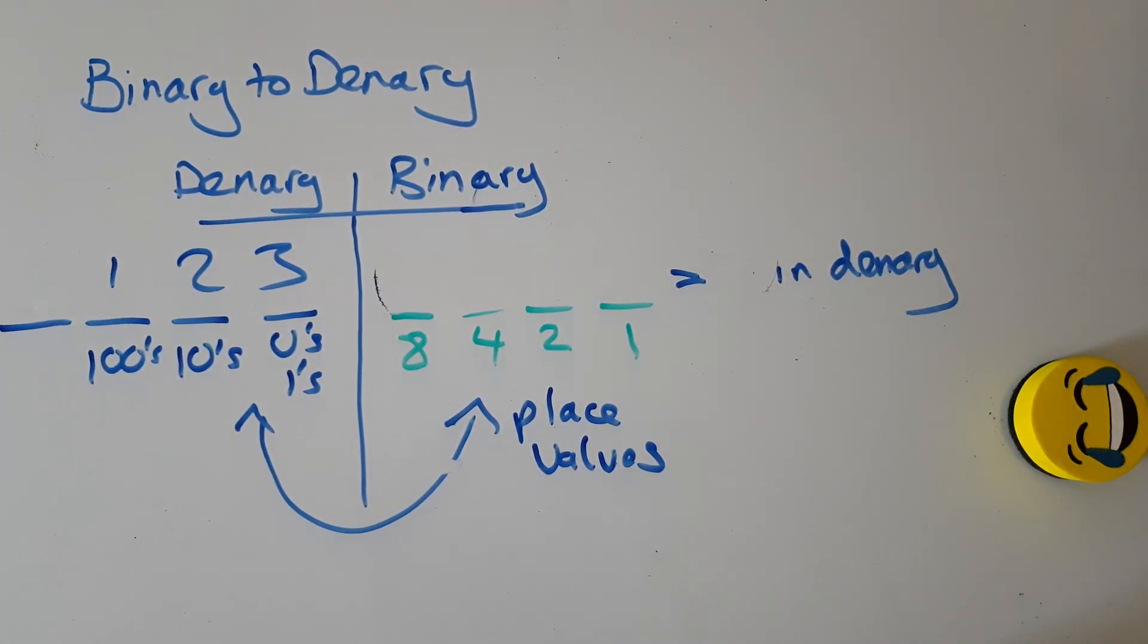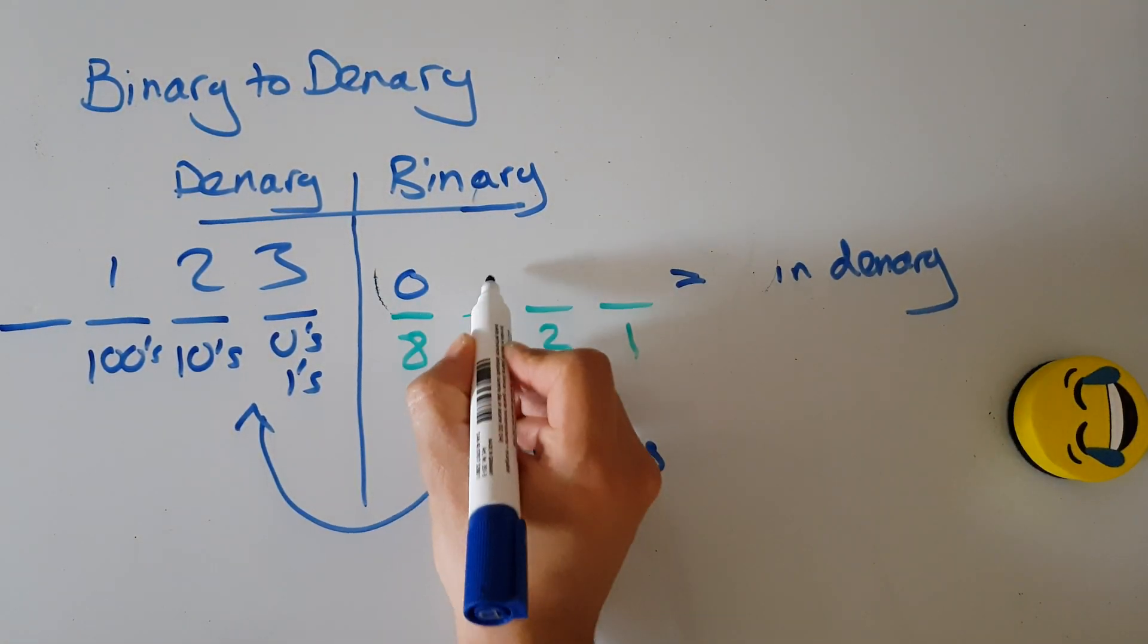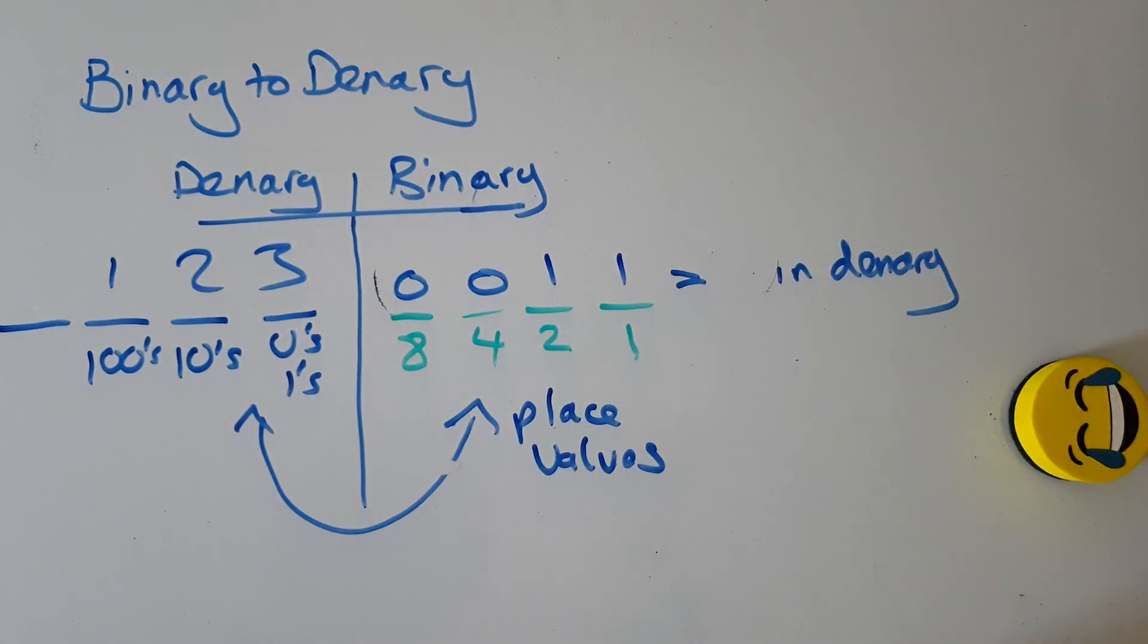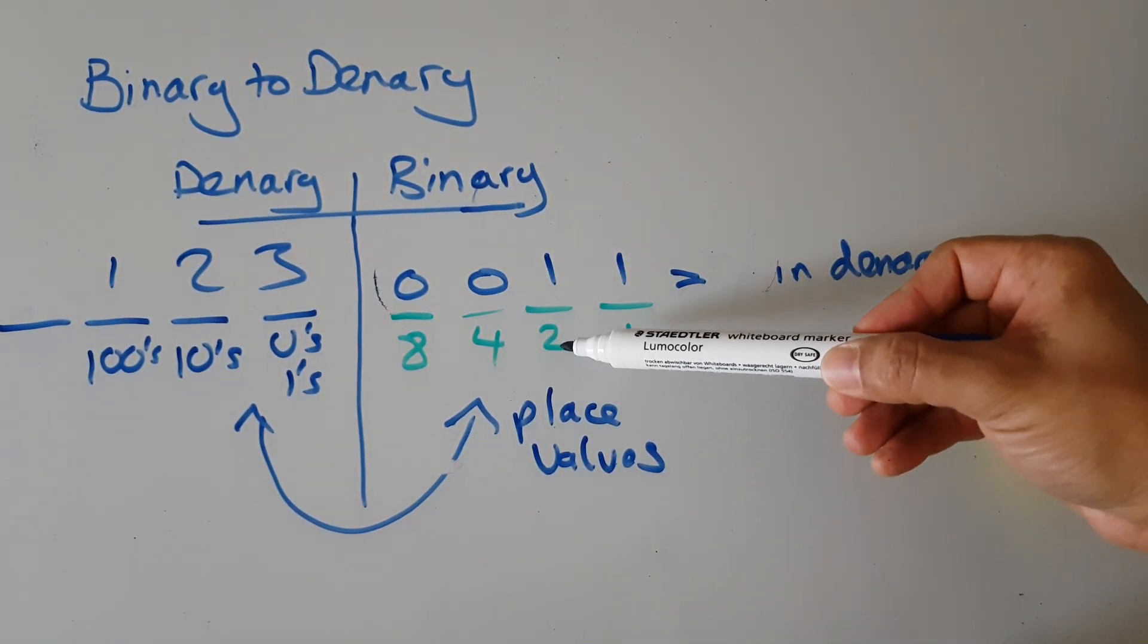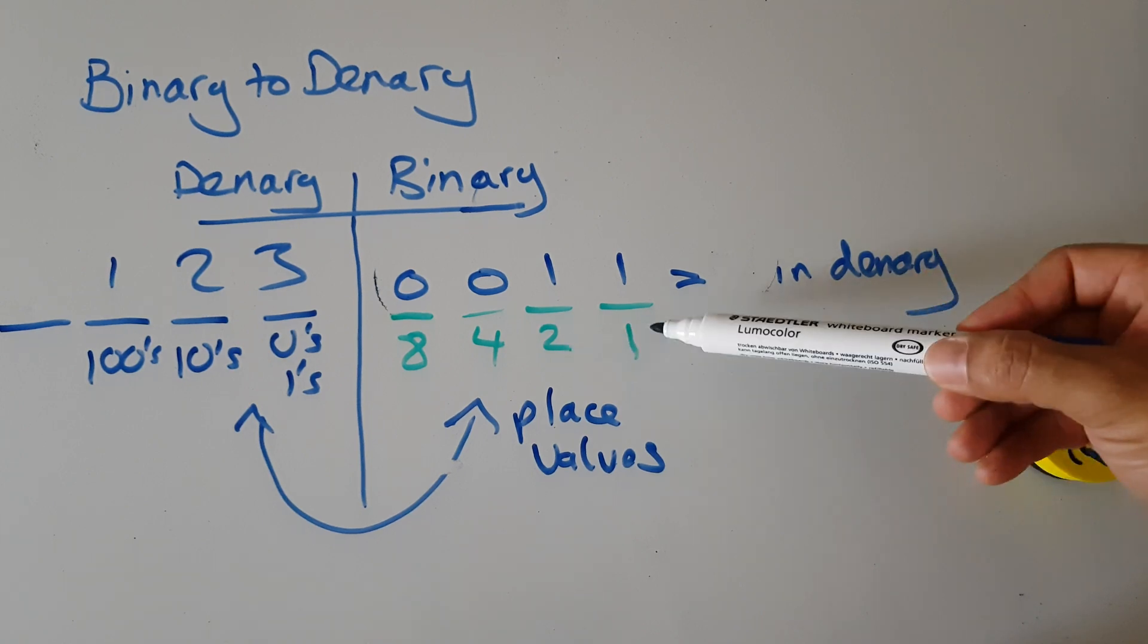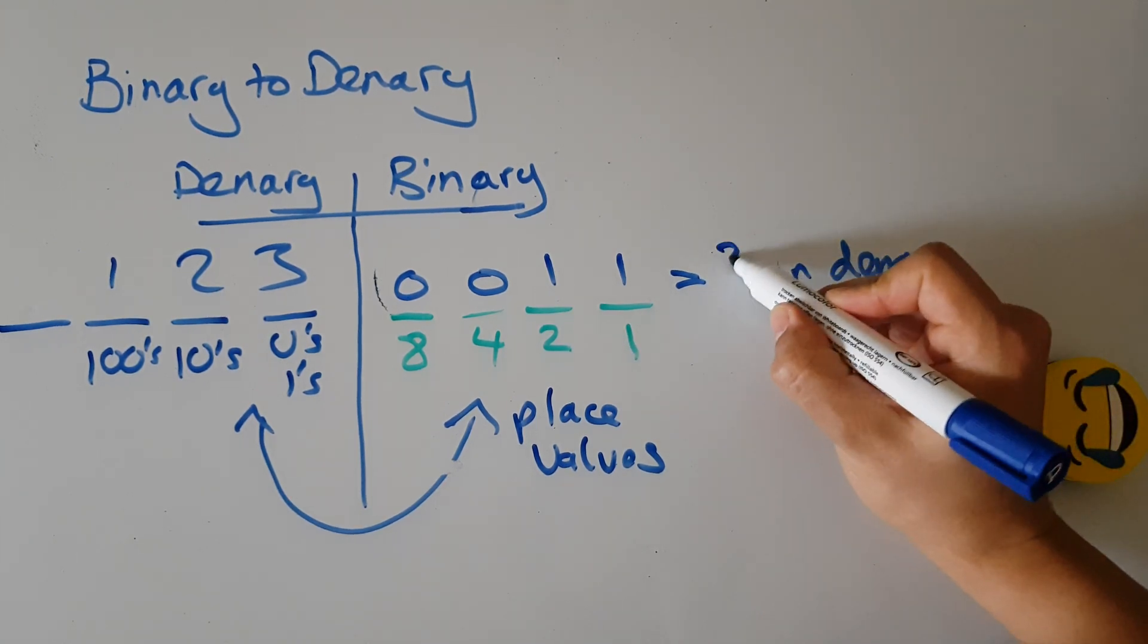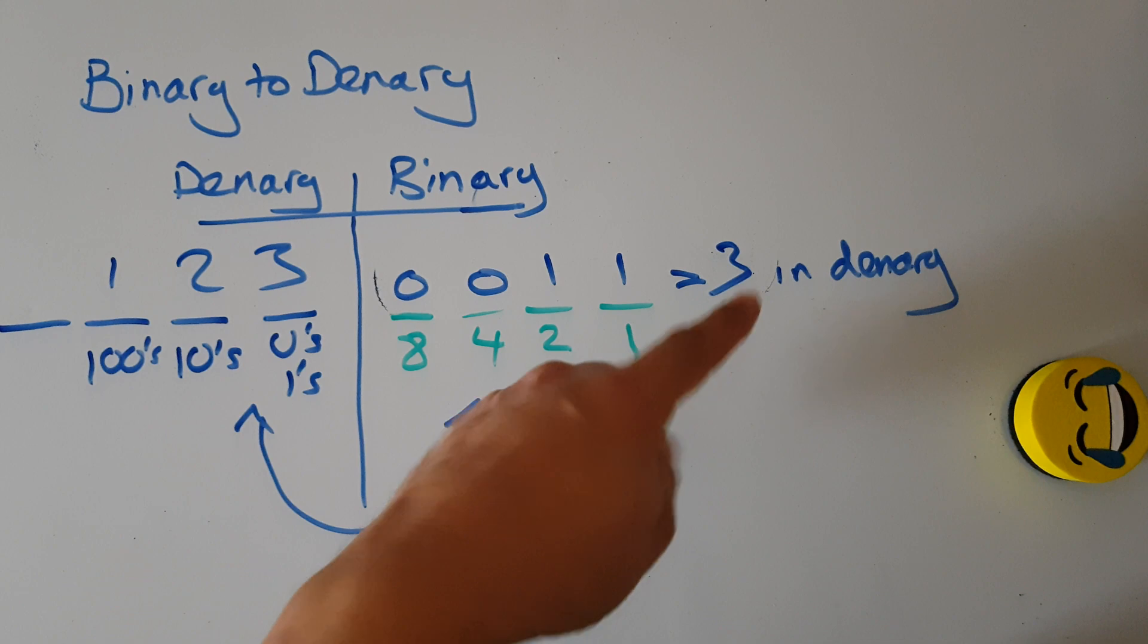Let's try something a bit harder. I'm going to switch on two place values: 0011. Well, the only place values I've switched on are the two and the one. Two plus one - that's three. So 0011 is three.